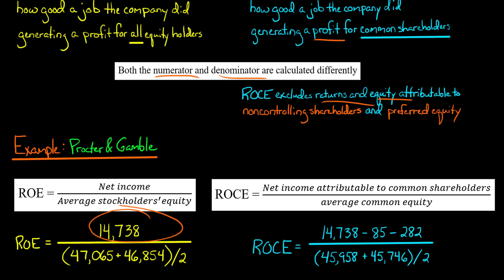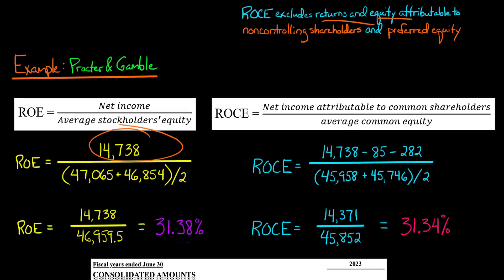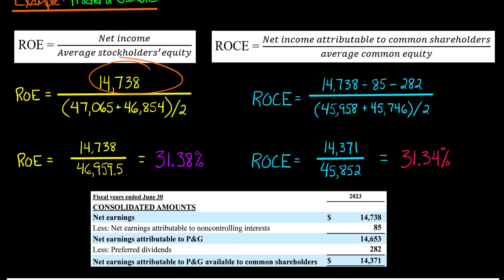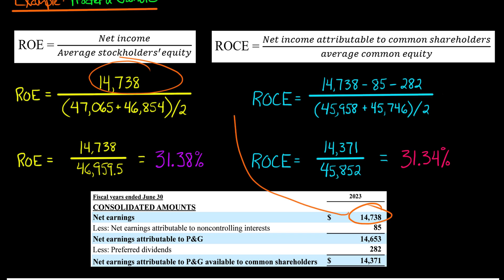I'm going to show you where I got Procter & Gamble's net income from. It came from their 10-K filing. In Note 6 of their 10-K filing, they had this disclosure where they showed the company's net income — they call it net earnings — and it's in millions. So even though it says 14,738, that's actually 14.738 billion. That is the net income in our numerator when we calculate return on equity.